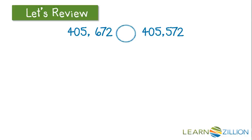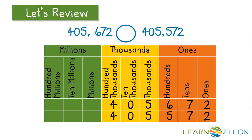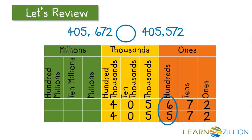Let's also review how to compare numbers. When we compare numbers, it is often helpful to write them on a place value chart. We always want to start with the digit that has the largest value, and in this case it's the hundred thousands. The hundred thousands both have the same digit, so we'll move to the next place. Again, the digits are the same, so we'll continue moving until we find digits that are different. In the hundreds, we have a six in one number and a five in the other. Six is greater than five, so we know that 405,672 is greater than 405,572.